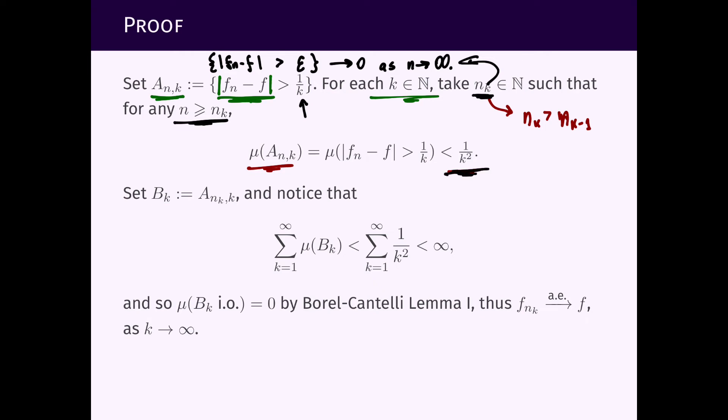And now what we do is consider B_k to be the set that is now indexed only by k, and why that? Because instead of n we are going to take the n_k that we got from here. So it will be to take n_k. So B_k, if you want, B_k will be the set f_{n_k} minus f larger than 1 over k.